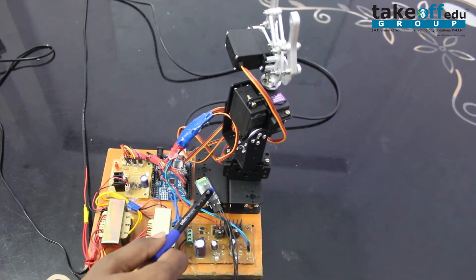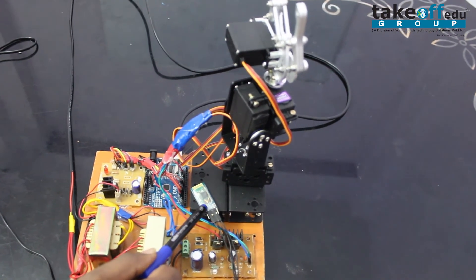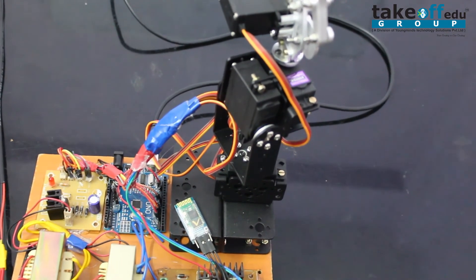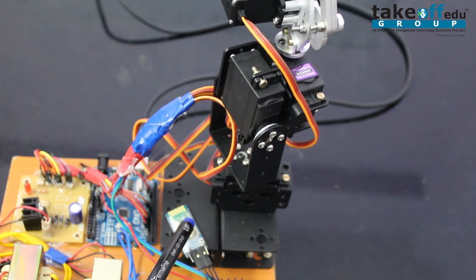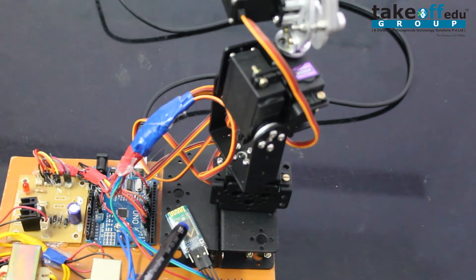And Bluetooth. By using this Bluetooth, we are communicating with this arm using our smartphone. We are giving any instructions using this Bluetooth only.